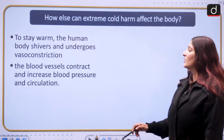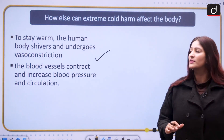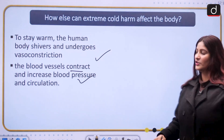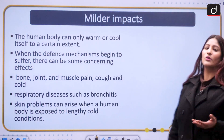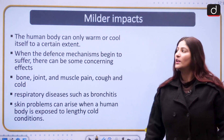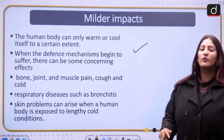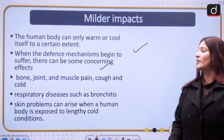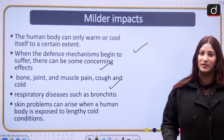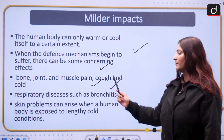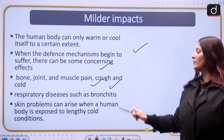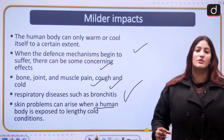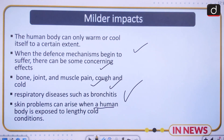To stay warm, the human body shivers and undergoes vasoconstriction — blood vessels contract, increasing blood pressure and circulation. People with high blood pressure can also go through hypertension, and all these people need to take care of themselves. The human body can only cope up to a certain extent; when its defense mechanisms begin to suffer, concerning effects arise. In winter, one may register bone pain, joint pain, muscle pain, cough and cold. Other respiratory issues like bronchitis may also occur, and prolonged exposure to cold can cause skin issues.